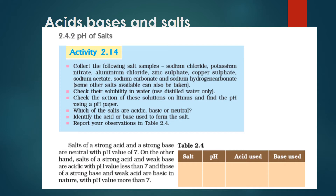Collect all the salts first. Next, check their solubility in water — use distilled water only. Check which ones are soluble. Then check the action of the solution on litmus paper, and find the pH using the pH paper. One by one, check the pH to identify which of the salts are acidic, basic, or neutral.